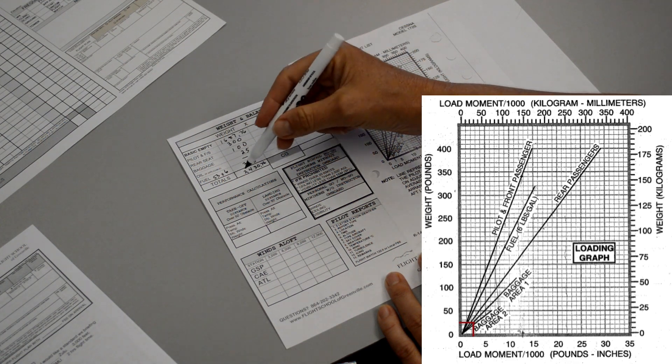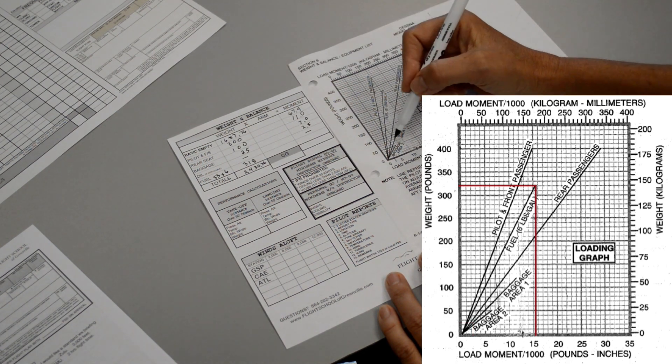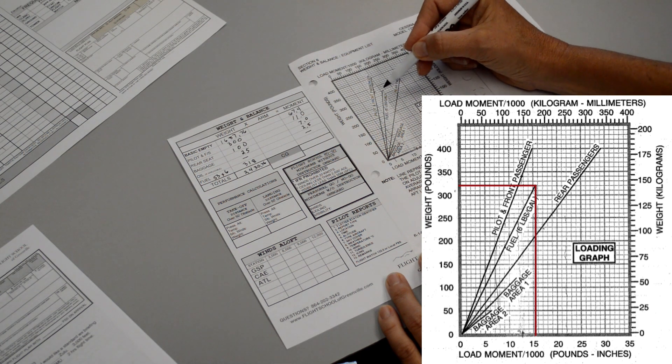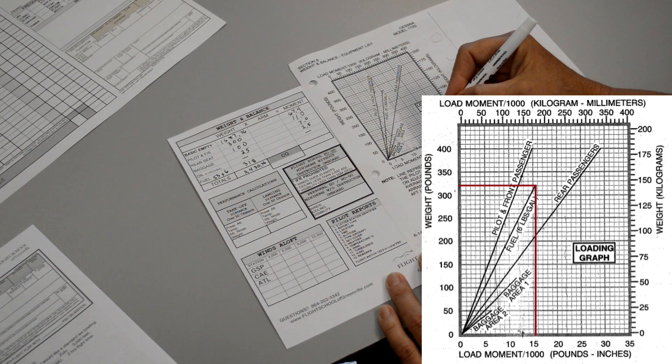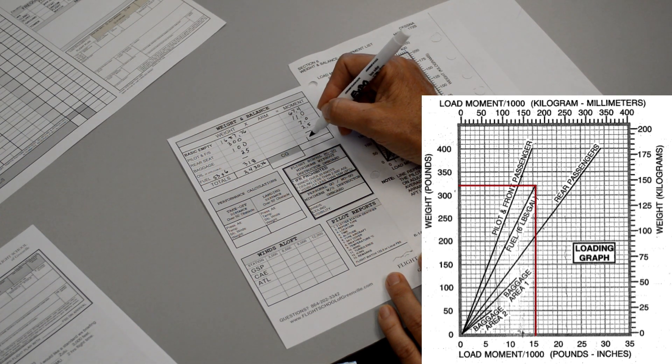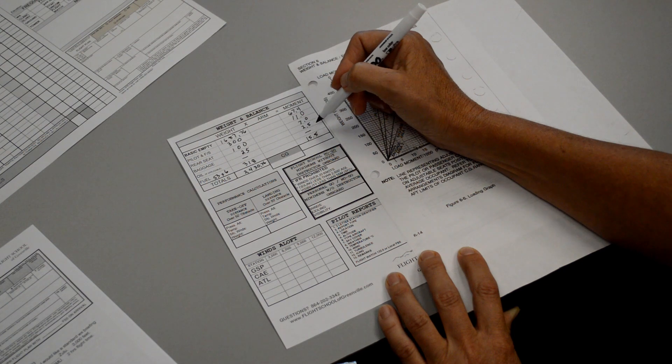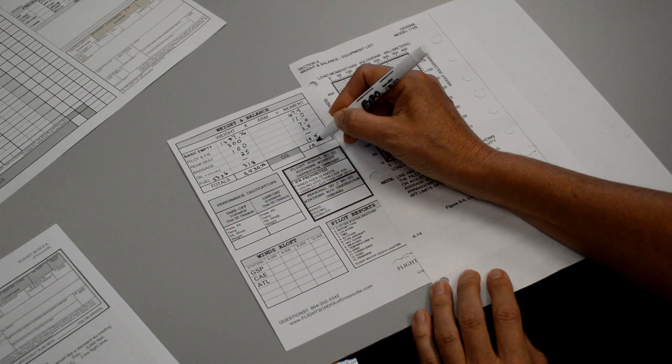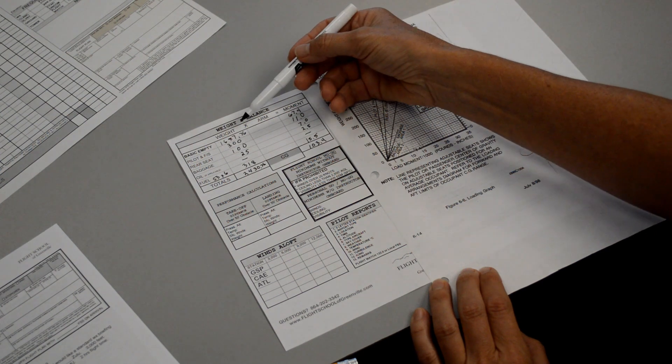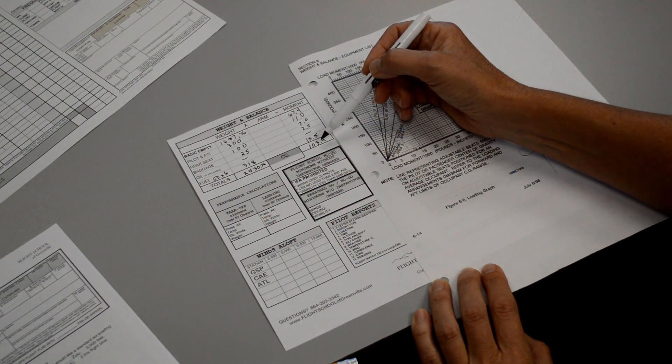There's no oil that we calculate in for this particular weight and balance. And then our fuel for 318 pounds, we go up 318 pounds and we come across. And this makes sense. We topped off so we're at the top of our fuel line here. And it looks like it, if we bring this down, it looks like it's right at about 15.5. So our moment for the fuel is 15.5. Now if we add up all of these moments, we end up with 103.4. So now we have the total weight, 2,430 pounds and the total moment, 103.4.